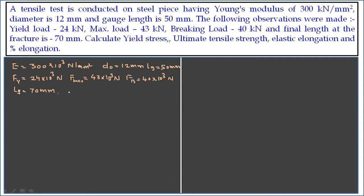Further it is said gauge length, that is the final length, is 70 mm. And we need to calculate the yield stress, ultimate tensile strength, then elastic elongation and percentage of elongation. So let us try to solve this particular problem.